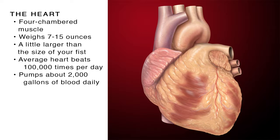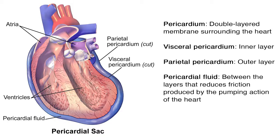The heart is surrounded by a double-layered membrane called the pericardium. The inner layer, or visceral pericardium, and the outer layer, the parietal pericardium, contain a clear pericardial fluid between them that reduces the friction produced by the pumping action of the heart.